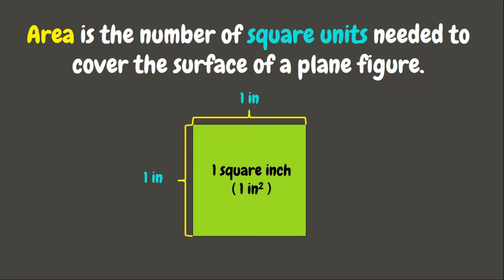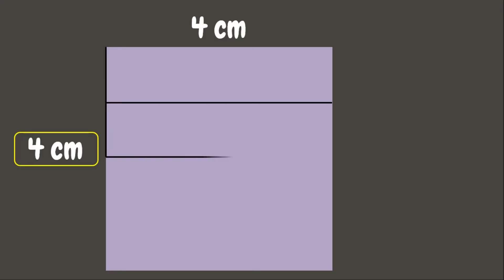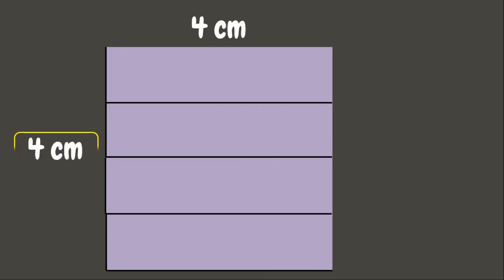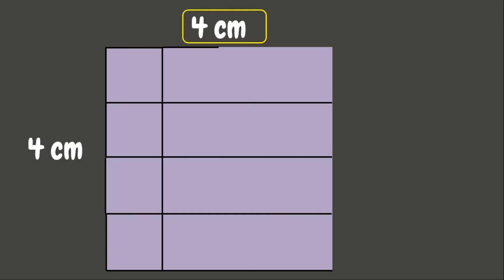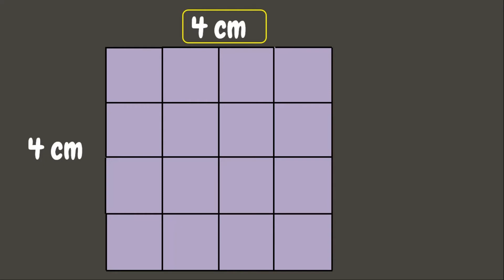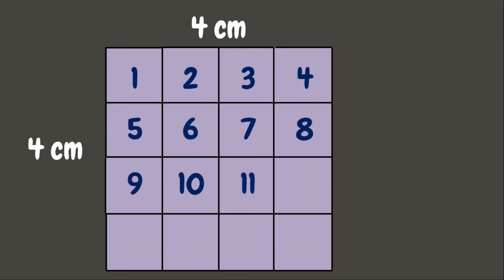To determine the area of a certain plane figure, we just simply need to count the number of square units it covers. Going back to our example — we have a square whose side measures four centimeters, so it has four one-centimeter units on each side. Now let us count: one, two, three, four, five, six, seven, eight, nine, ten, eleven, twelve, thirteen, fourteen, fifteen, and sixteen square centimeters.